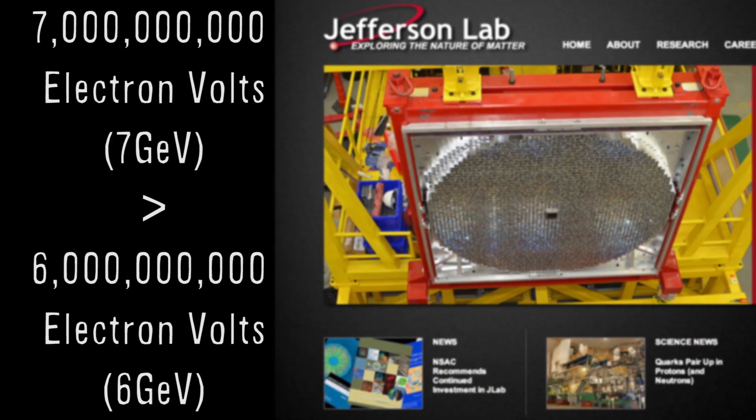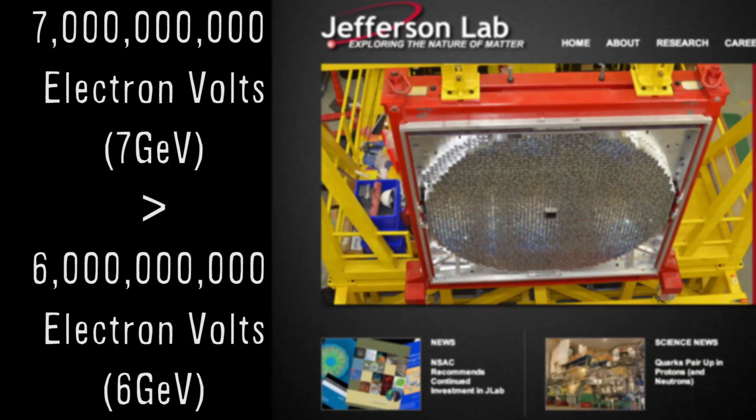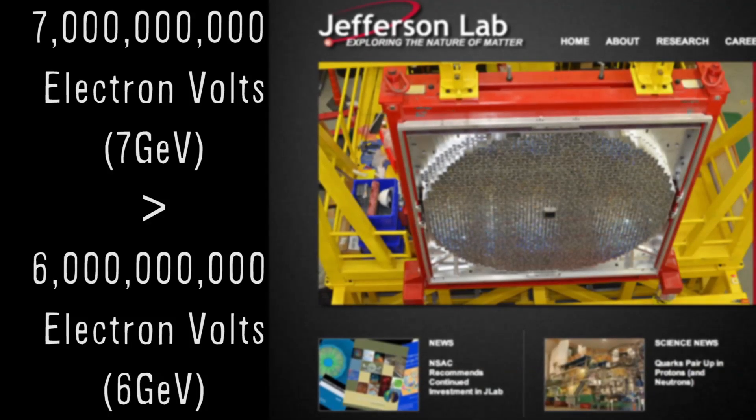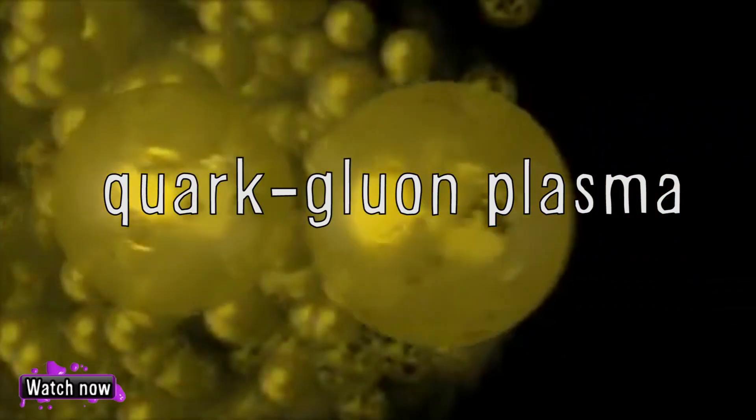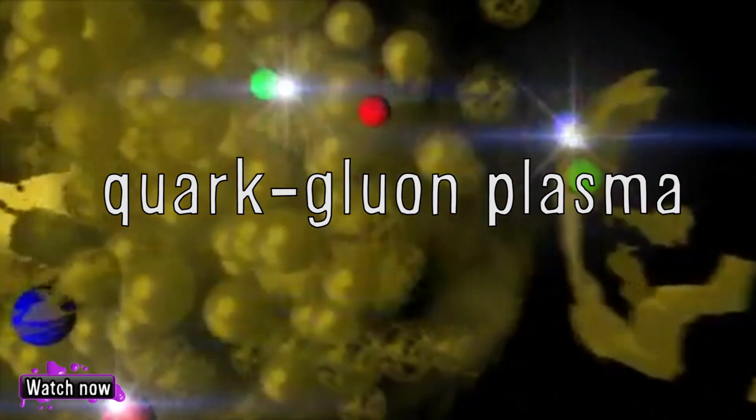His fist has pretty much become a particle beam. At 7 billion electron volts, it's more powerful than the Jefferson Labs particle accelerator in Virginia. The atoms that made up you would be completely disintegrated, you'd be liquefied at the atomic level. You'd turn into fundamental particles and quark-gluon plasma, which is what was created right after the big bang.